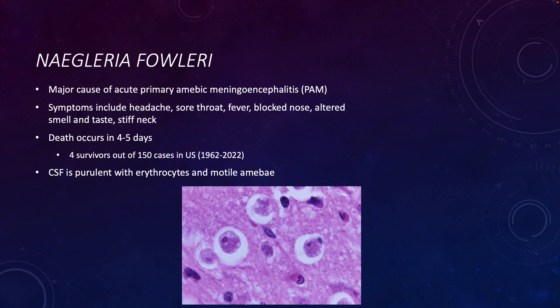The next amoeba that we'll talk about is Naegleria fowleri. This is the major cause of acute primary amoebic meningoencephalitis, sometimes abbreviated PAM. Sometimes people call this the brain-eating amoeba. We have now discussed bacteria, viruses, fungi, and parasites that can cause meningitis. Symptoms of Naegleria fowleri infection include headache, sore throat, fever, a stuffy nose, altered sense of smell and taste, and a stiff neck.